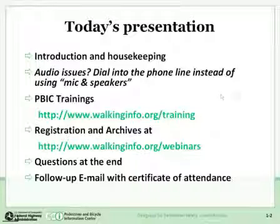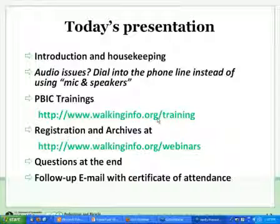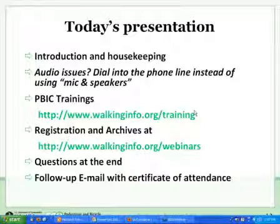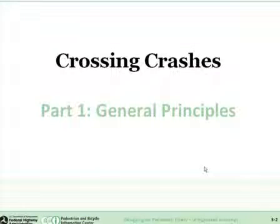Peter Unn is also on the line. Peter is with the Federal Highway Resource Center Safety and Design Technical Service Team, and has been with the agency approximately 12 years. He has been involved with the pedestrian safety team with Charlie for approximately five to six years. Today we want to cover a couple of different topics: first, basic crossing principles — what we need to understand about pedestrian crossings and how they interact with motor vehicles — and then the countermeasure aspects of what we can do to improve safety for pedestrians crossing at unsignalized locations.